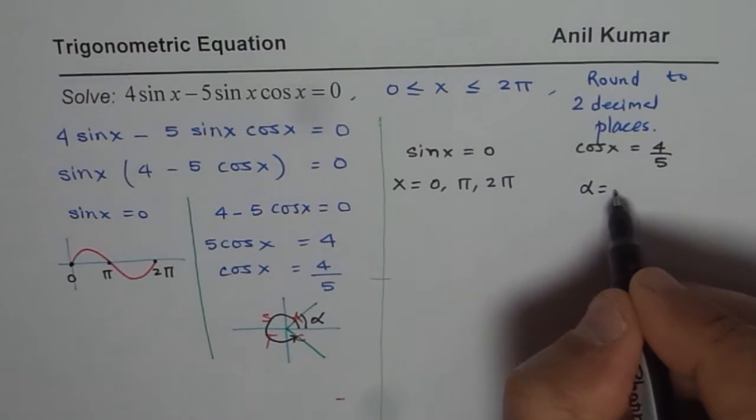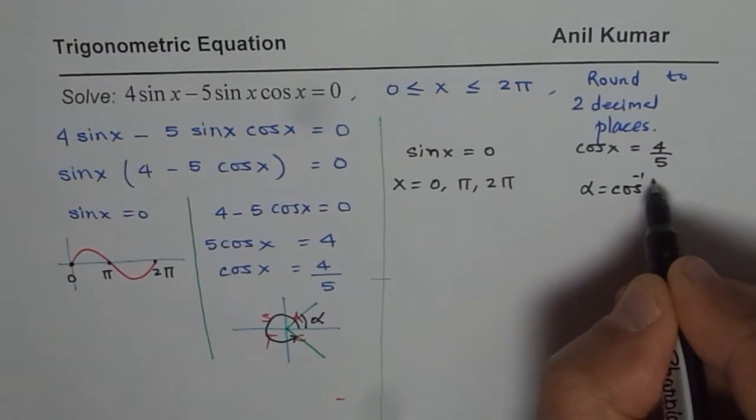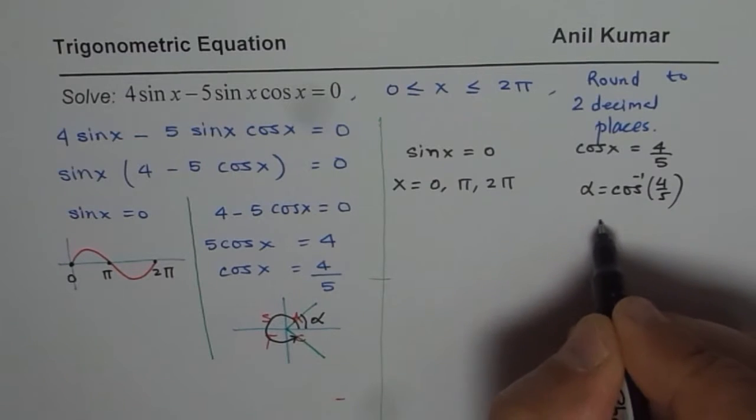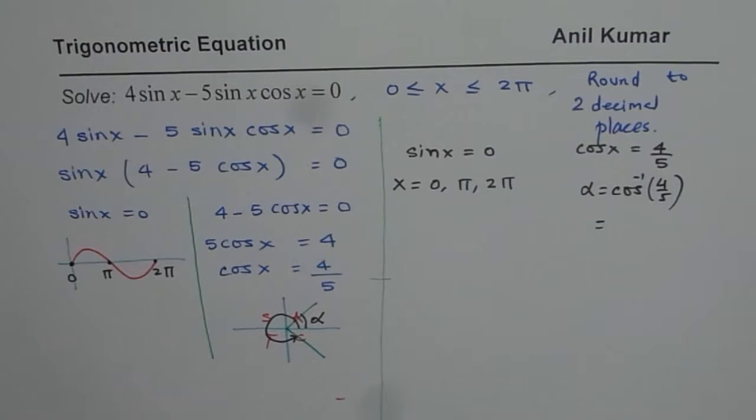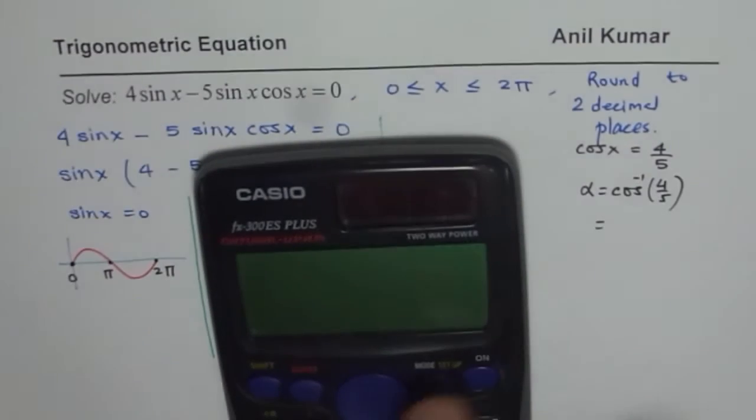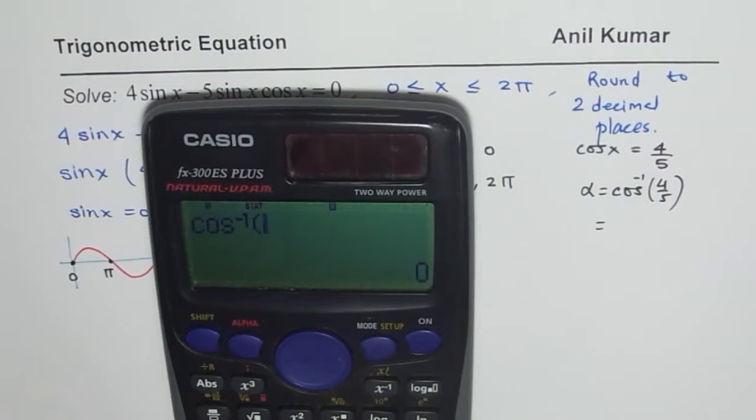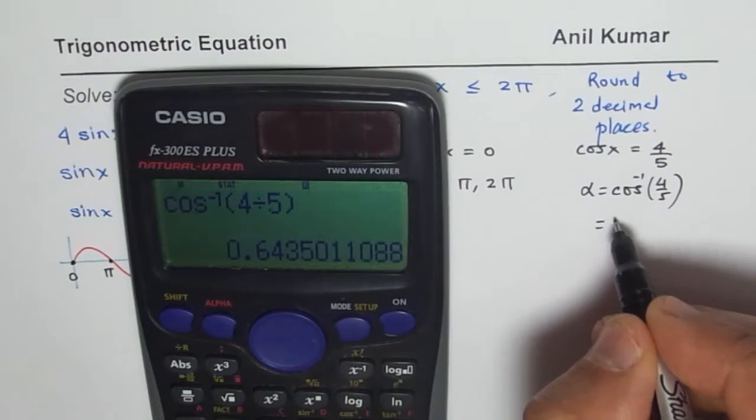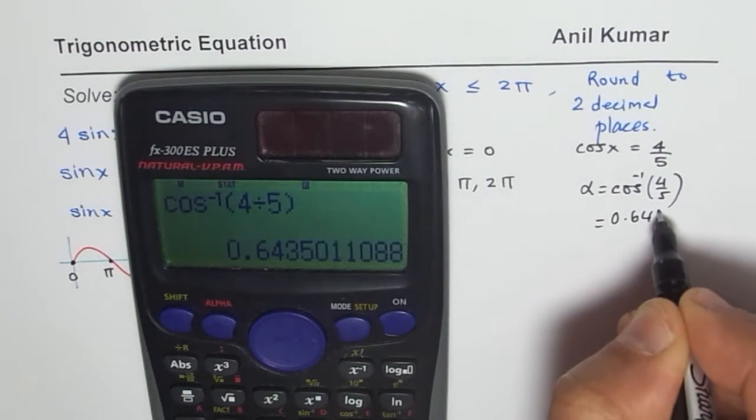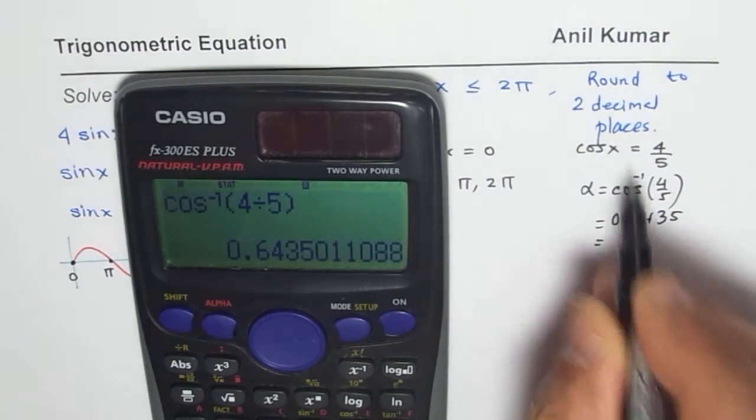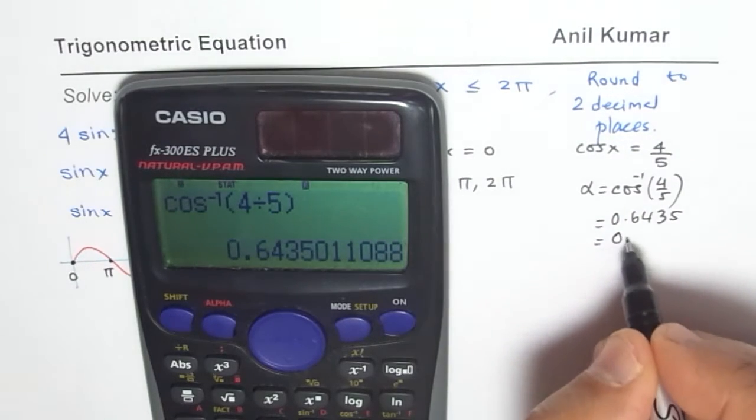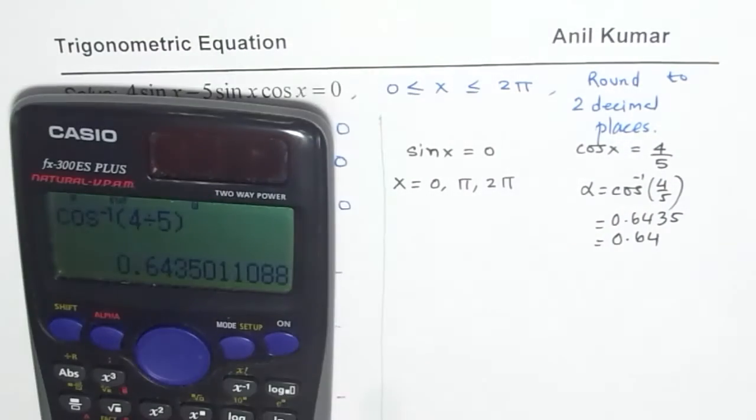So I will say alpha equals to cos inverse of 4 over 5. Let us find how much that is. So let us use calculator. Calculator should be in radians. So we will do mode and change it to radians. And now we do cos inverse of 4 divided by 5 and that gives us a value of 0.6435. Let us round this to two decimal places, 0.64. That is the first answer.